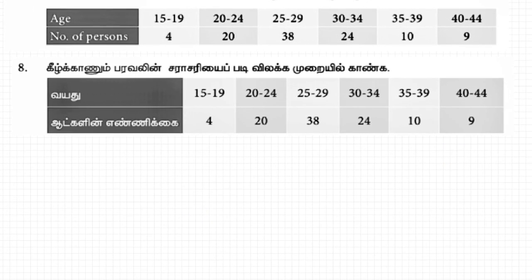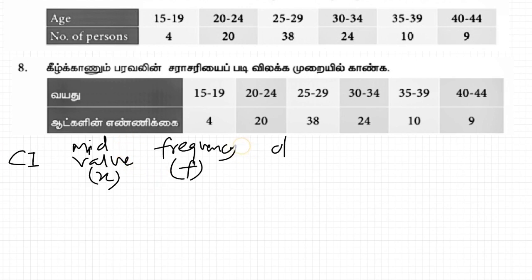Now I'll write the columns: class interval, then mid value x, then frequency f, and d. This is the important column. That is equal to x minus a by c, where a is assumed mean and c is width of the class interval. And the last column is f into d.